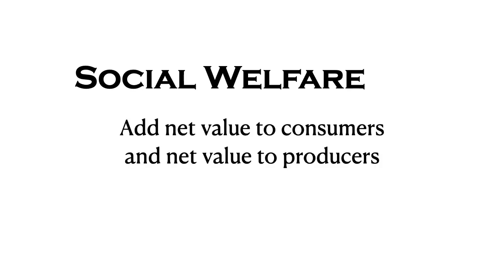So we've looked at consumers and consumer surplus, and producers and producer surplus. If we combine these, we can look at social welfare. And social welfare in this model is really quite simple. To find the value to society, we add the net value to consumers and the net value to producers.